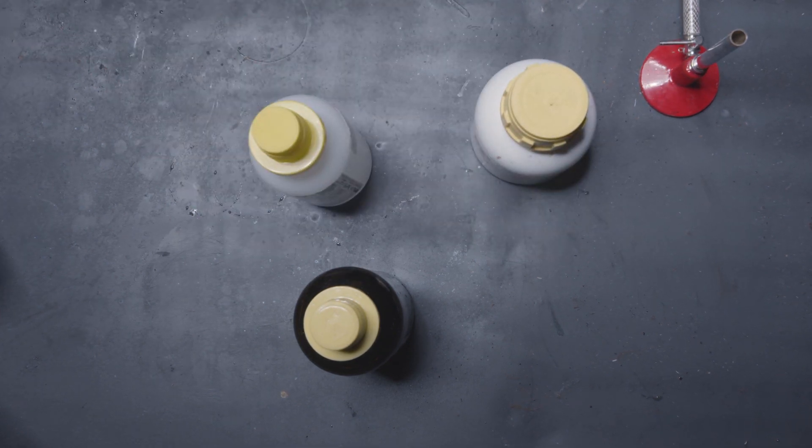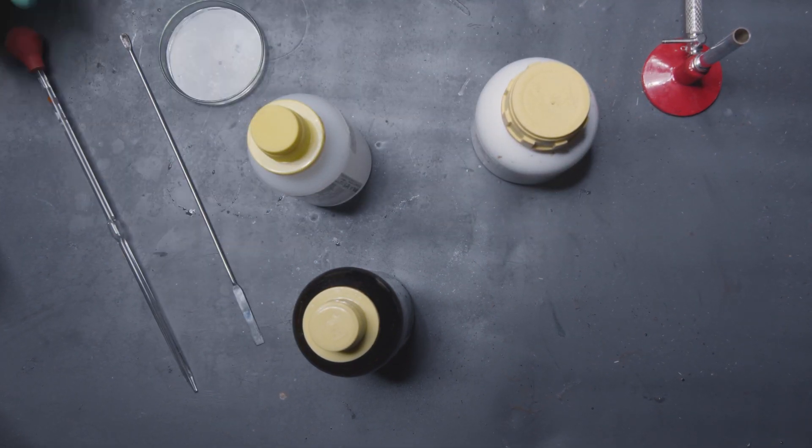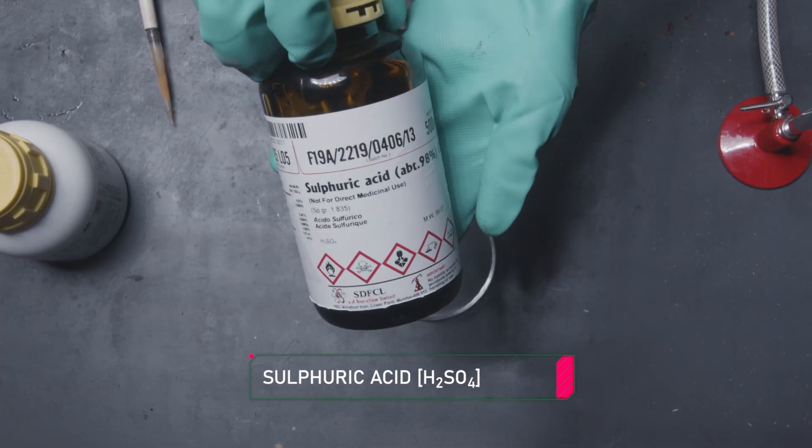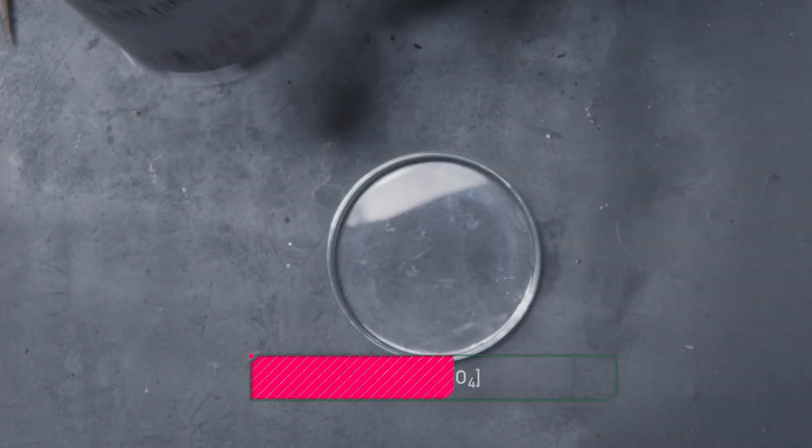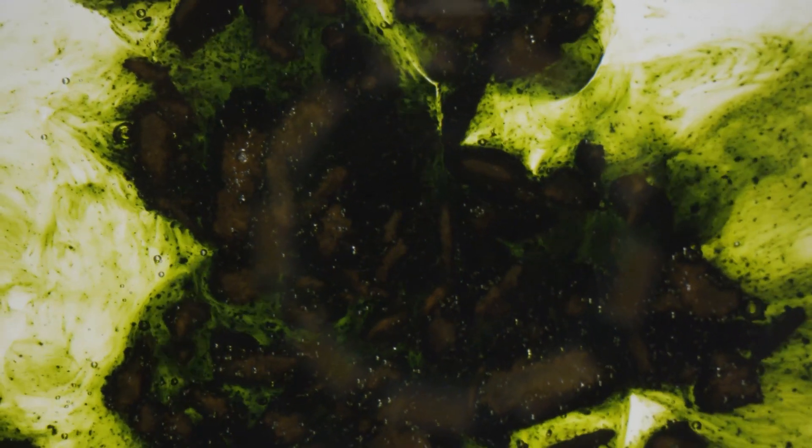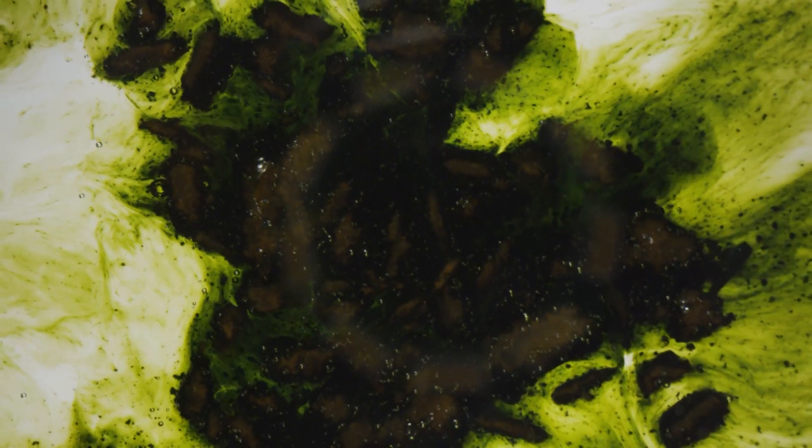So manganese heptoxide is usually made by mixing two common chemicals, sulfuric acid and potassium permanganate. But before we get this party started, there are a few things you guys should know.